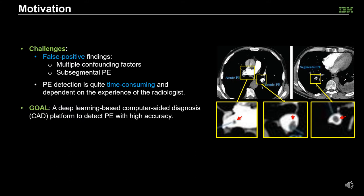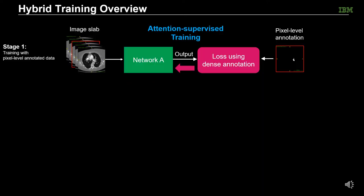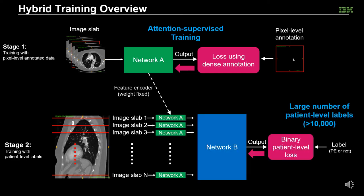Therefore, we aim to develop a deep learning-based CED framework to detect PE with high accuracy. We propose a hybrid training framework with two stages. In stage 1, we utilize pixel-level annotations to train the feature encoder network with attention supervised training. Then in stage 2, we utilize a large number of patient-level labels to train the PE prediction network.